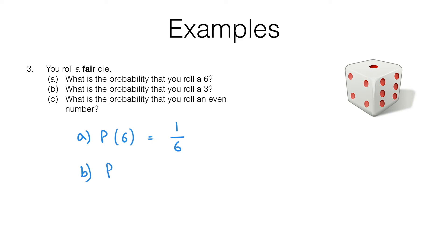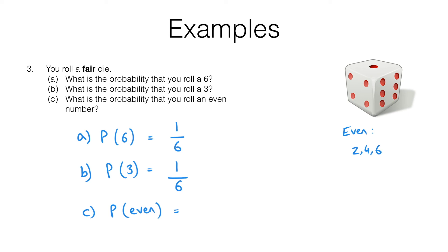In part C we're finding the probability of rolling an even number. That's the number of ways we can get an even number. A die has three even numbers: two, four and six. So there are three ways that event can occur out of a total of six possible outcomes. Our probability is three sixths, which as a fraction we can simplify down to one half.